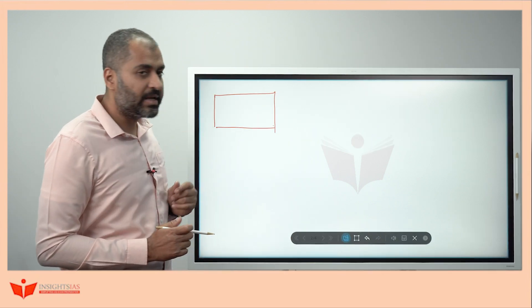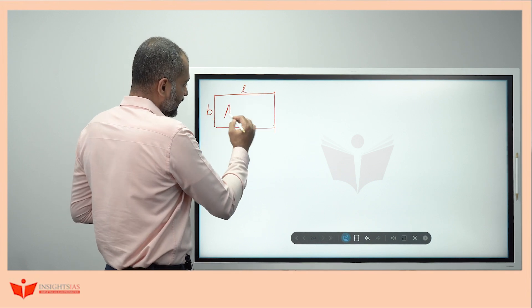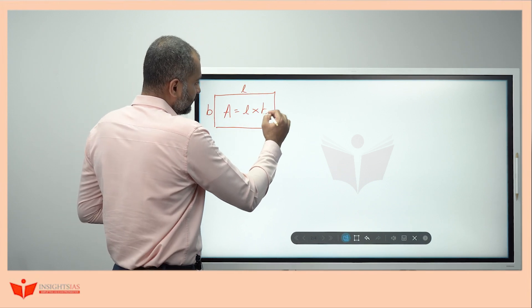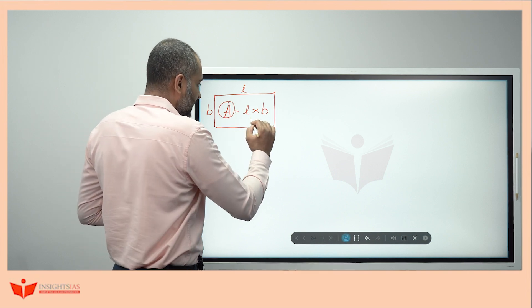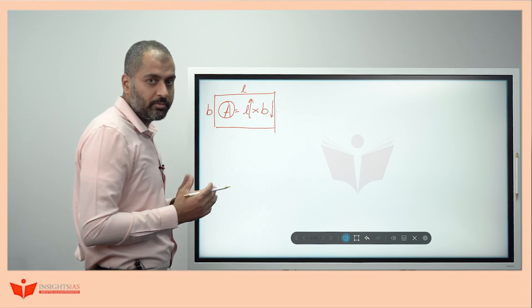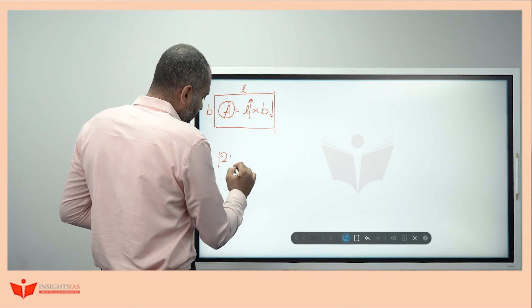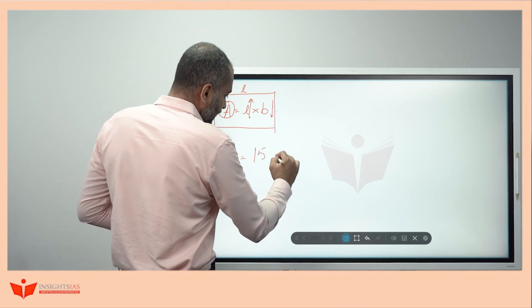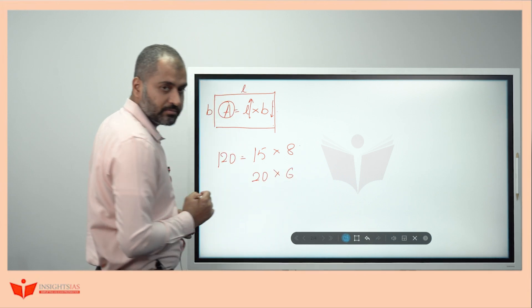Before going to this question, I'll explain you some of the basics. If this is a rectangle of length L, breadth B, area is equal to length into breadth. If you keep this area same and if you increase this length, the breadth has to come down. For example, look here now. 120 is a product of 15 into 8 as well as 20 into 6, both.